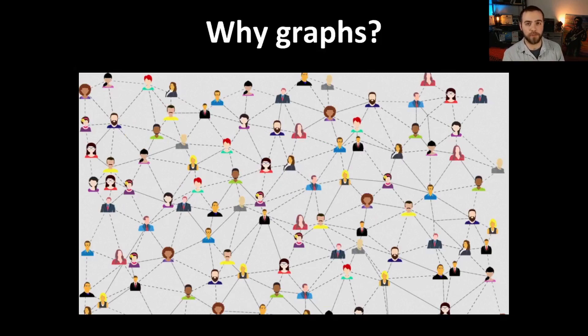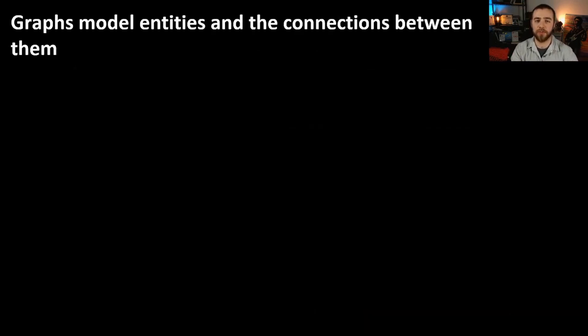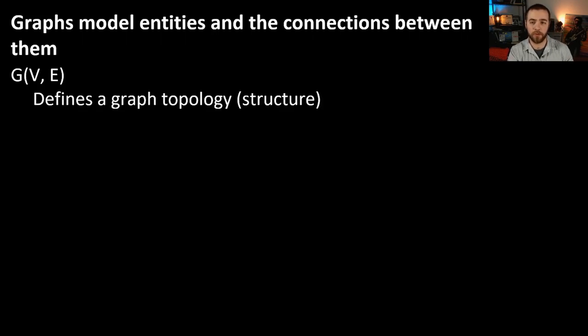So let's answer this first question first and foremost. Why do we want to use graphs in the first place? So graphs are a very interesting type of model because they model entities and the connections between them. And that might sound kind of vague and nebulous right now, but we're going to get into some more specific examples really soon here. So a basic graph is defined by two things, two numbers, and you don't have to know what these numbers are right now. I'm going to talk about that in one second.